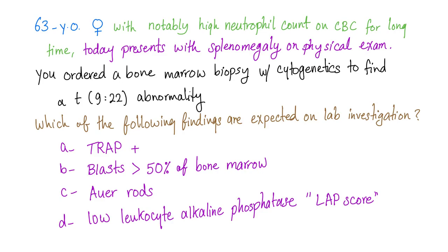Let's try to answer this vignette. A 63-year-old female with a notably high neutrophil count on CBC, which she has had chronically for a long time. Today she presents with splenomegaly on physical exam — the spleen is about 10 centimeters below the left costal margin. You ordered a bone marrow biopsy with cytogenetics and found a translocation between chromosomes 9 and 22. Which of the following findings are expected on lab investigation? TRAP positive, blasts greater than 50% of bone marrow, Auer rods, or low leukocyte alkaline phosphatase? Please let me know the answer in the comment section and I'll reveal it in the next video.